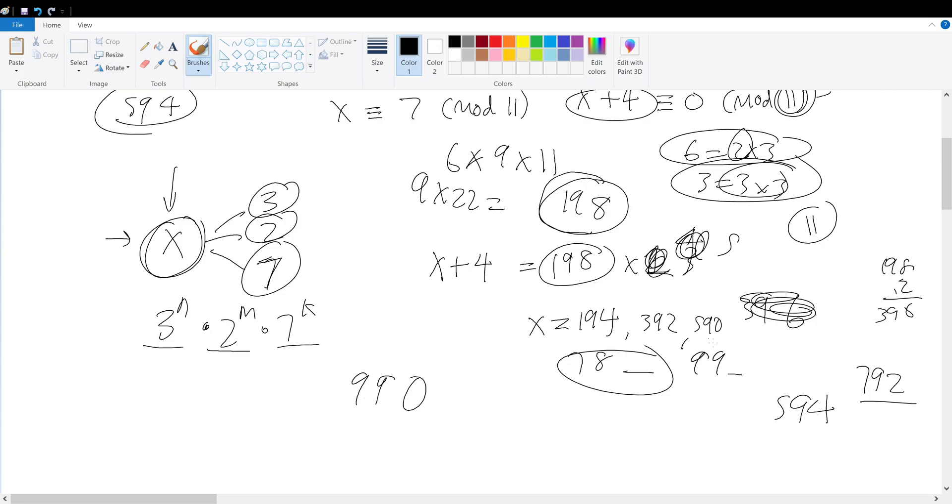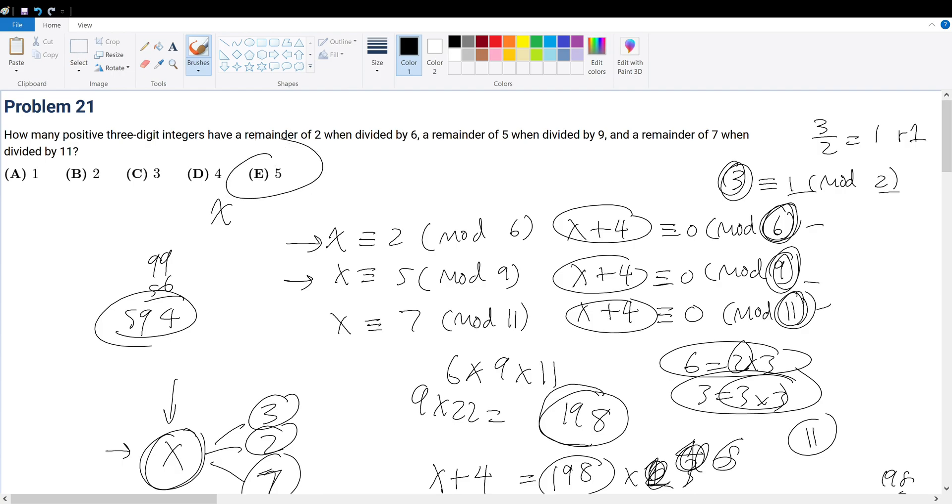Because if we multiply by 6, right, that would be way too large. So we have 1, 2, 3, 4, 5. We have 5 total possible cases. So our answer must be choice E.